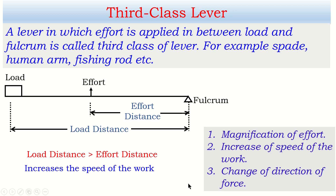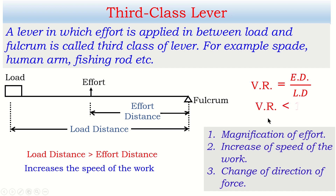Regarding velocity ratio: it is the ratio of effort distance to load distance. In this case, effort distance is less and load distance is more, so a smaller value divided by a larger value gives a result less than one. Therefore, in a third class lever, the velocity ratio is always less than one.